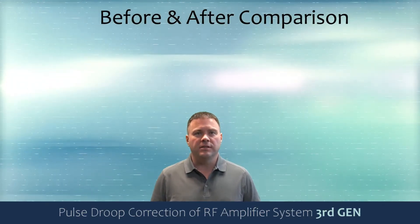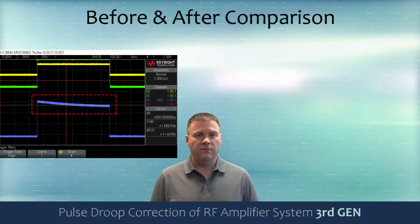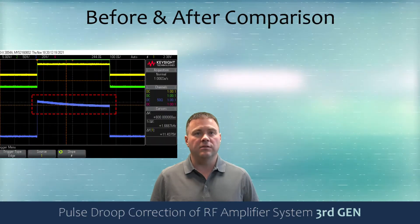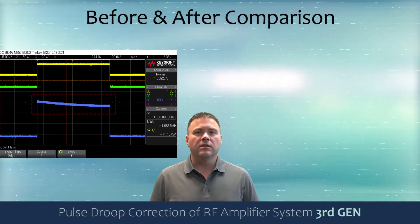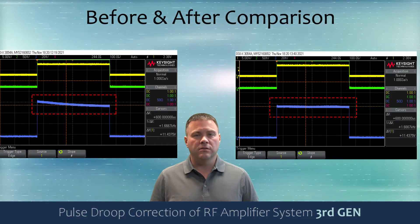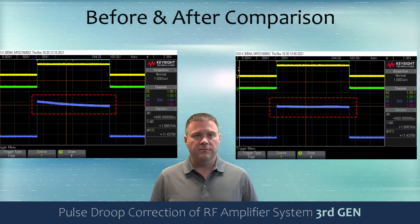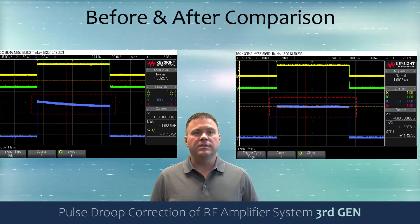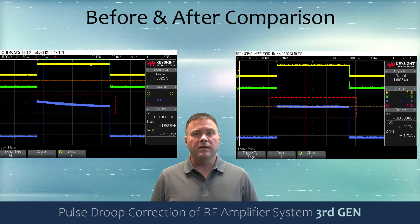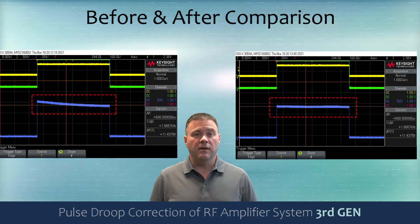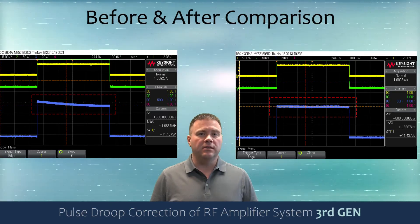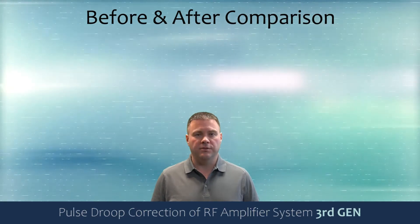As a final comparison, on the left we have the natural RF droop that we took a look at in the beginning, and we have the corrected output on the right. We can see that the right is far flatter than the left and the output is consistent throughout the pulse.